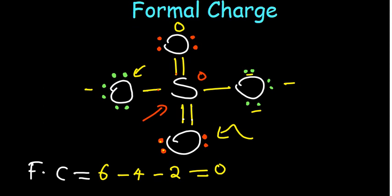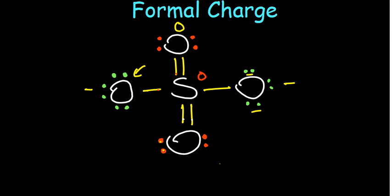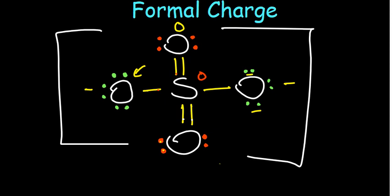The net charge of the entire compound is going to be the addition of all the signs. So therefore, we'll put it in brackets. So we have two negatives, which will give us a minus two. Two minus is the net charge of the entire compound. So that's why the formula is basically written to be SO4, two minus.